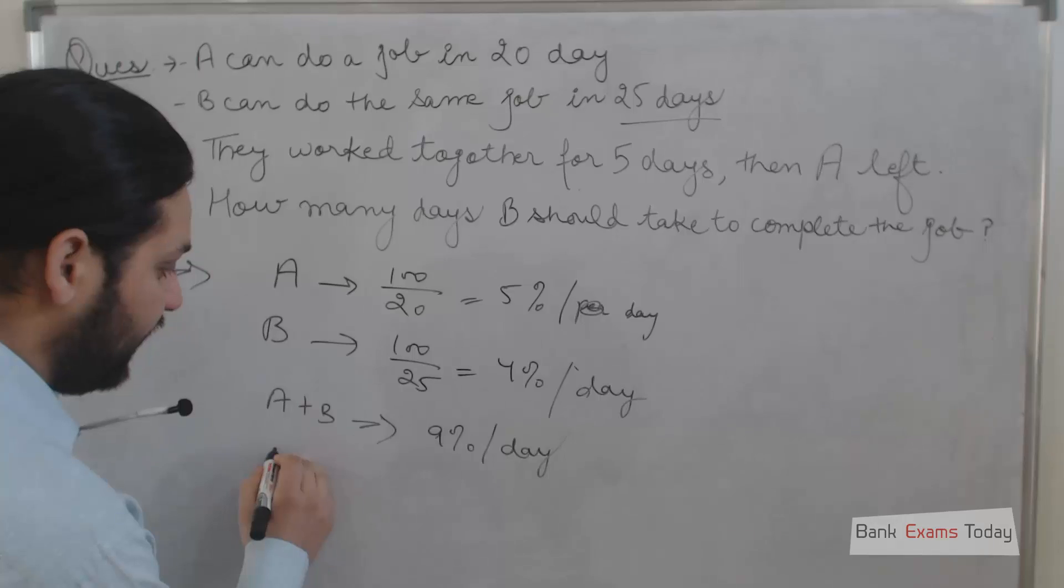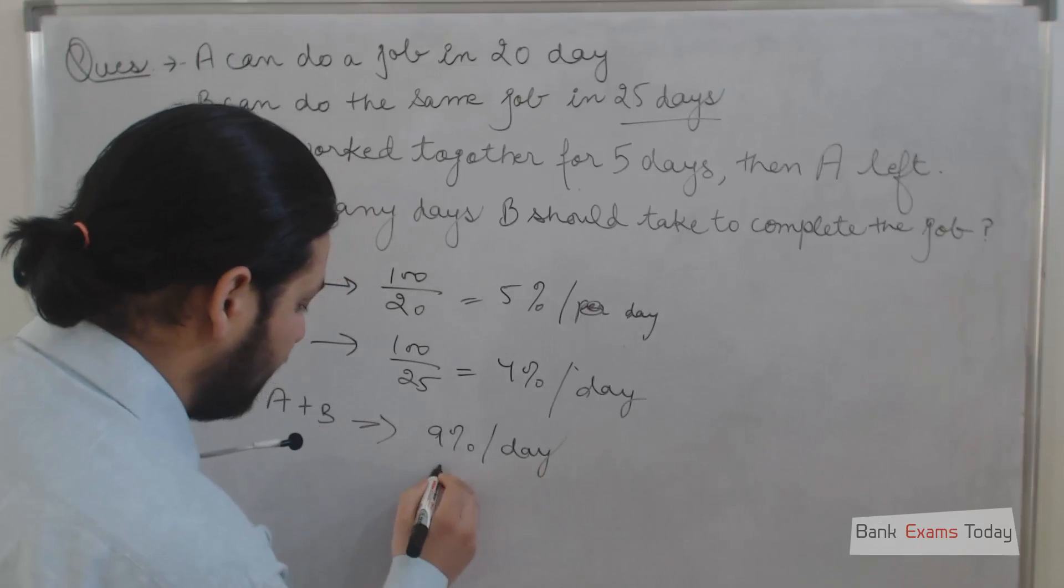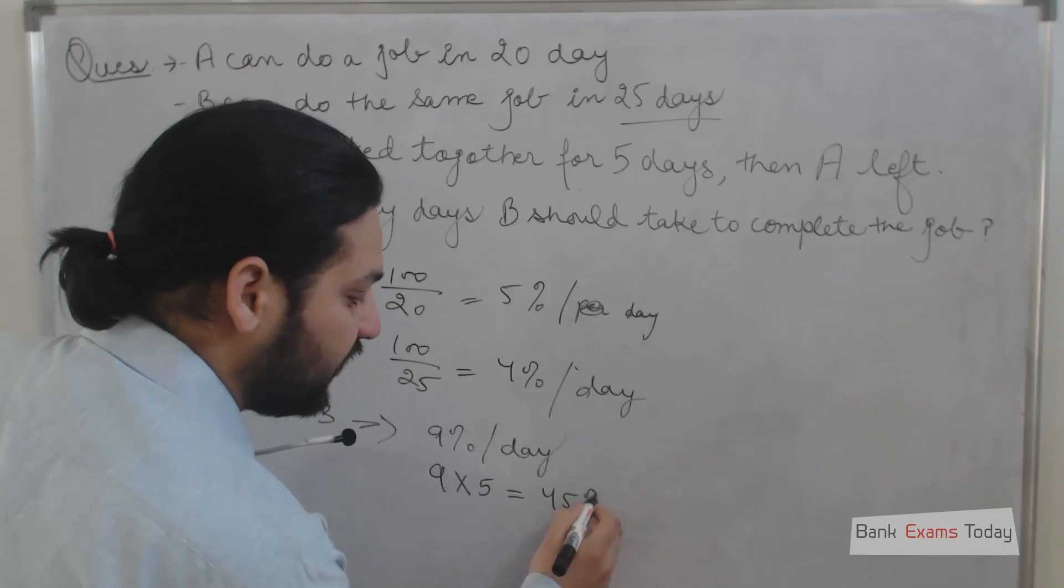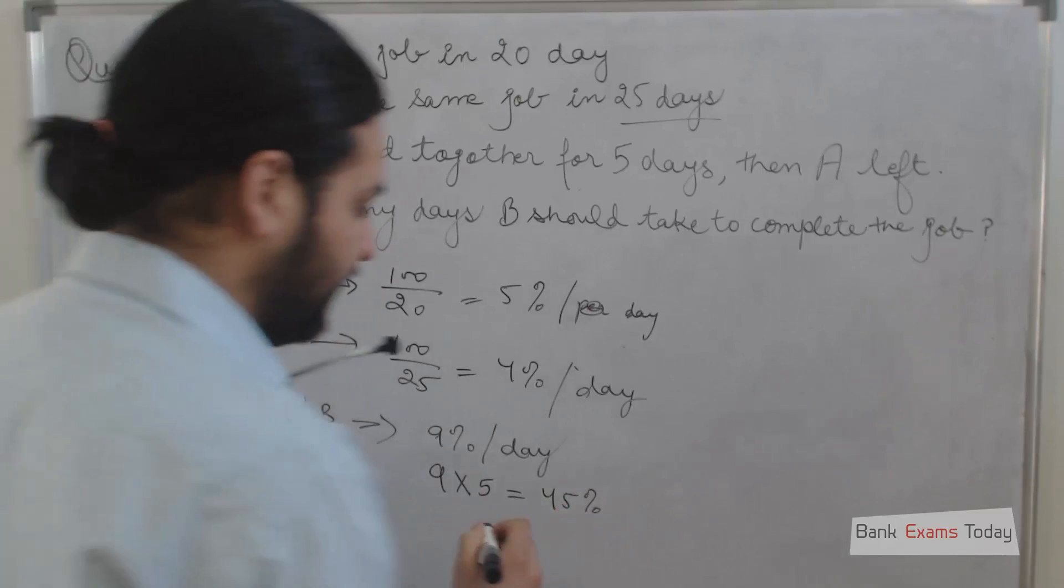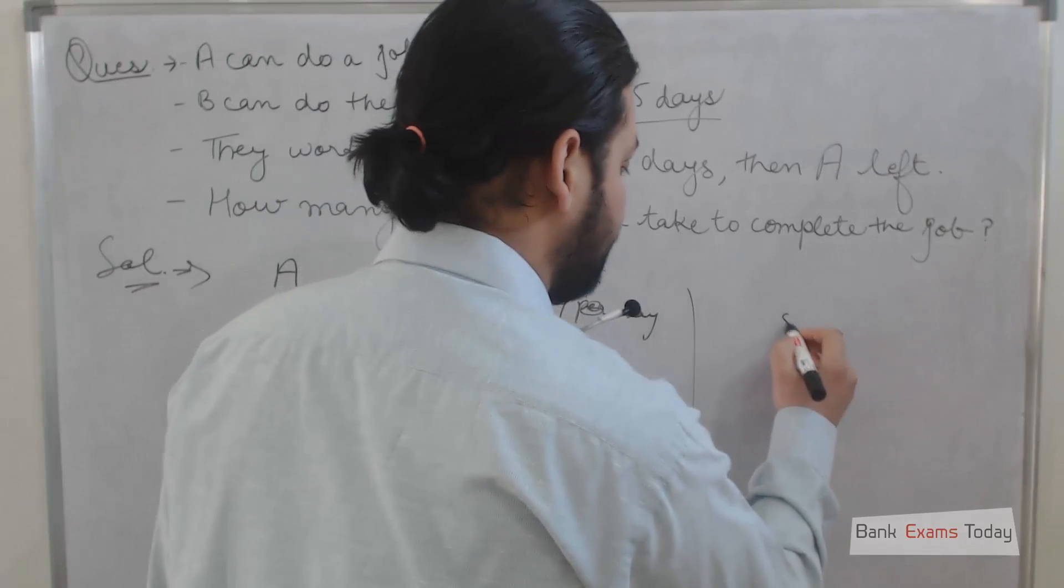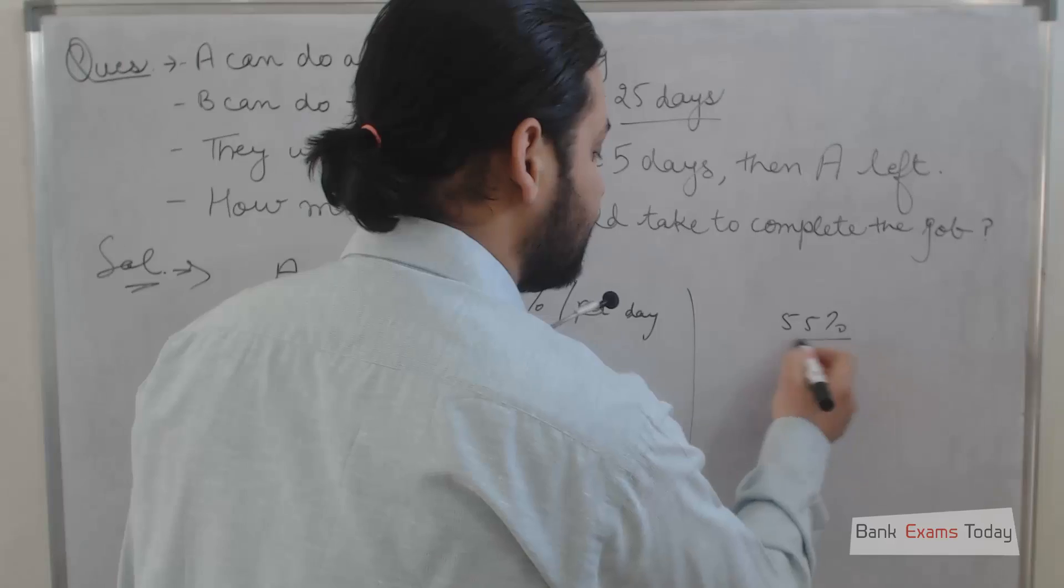If they work for 5 days, in 5 days they can do 9 multiplied by 5. In 5 days they can do 45% of the work, and they still need to do 55% of the job.